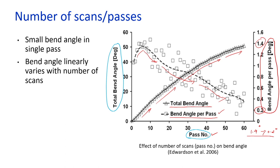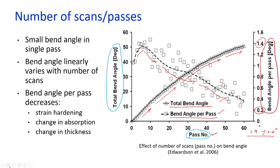The reduction in bend angle per pass with increasing passes is attributed to three factors: strain hardening of the material due to repeated thermal treatment, change in absorptivity as the surface quality changes (melting and redeposition increase reflection), and change in thickness — the increased volume available for heat conduction means less deformation for the same heat flux density applied.